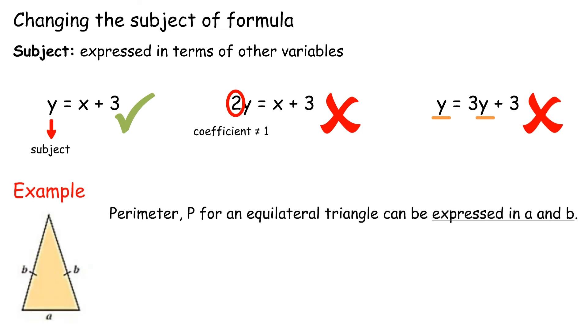Perimeter p for an equilateral triangle can be expressed in a and b. Hence, p equals a plus 2b. The subject of formula of the equation above can be changed as shown: 1, a equals p minus 2b. 2, b equals p minus a over 2.